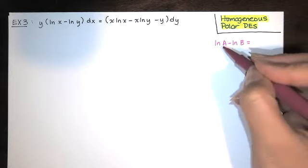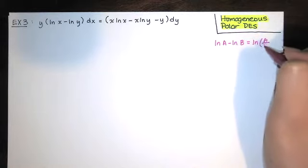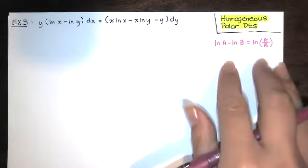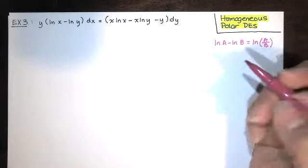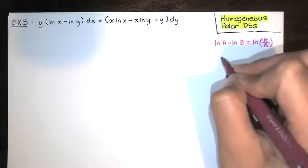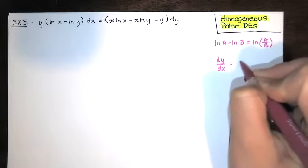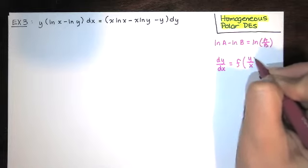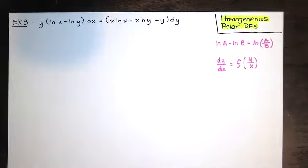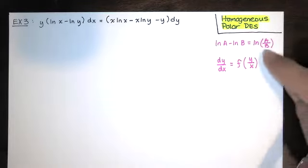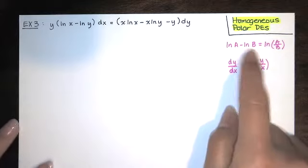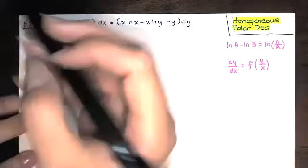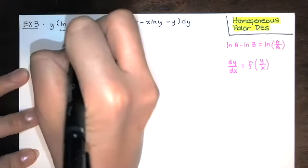Remember from algebra, if you have natural log of a minus natural log of b, that can be written as natural log of a over b. Since that's the case, this differential equation can be written in terms of x over y.